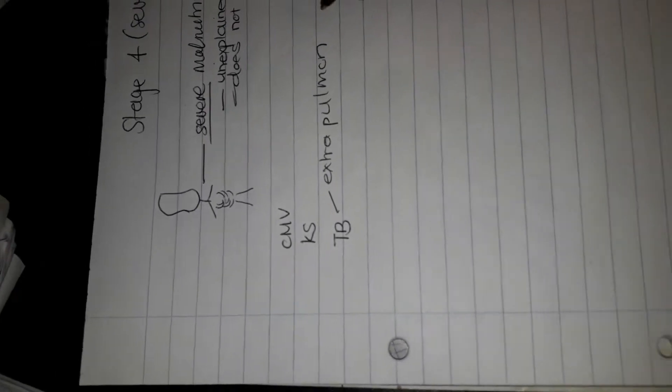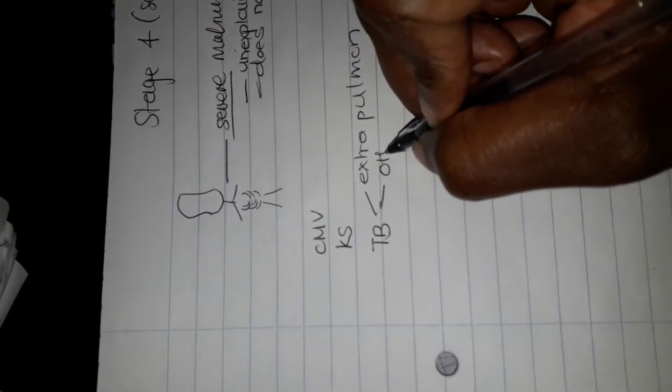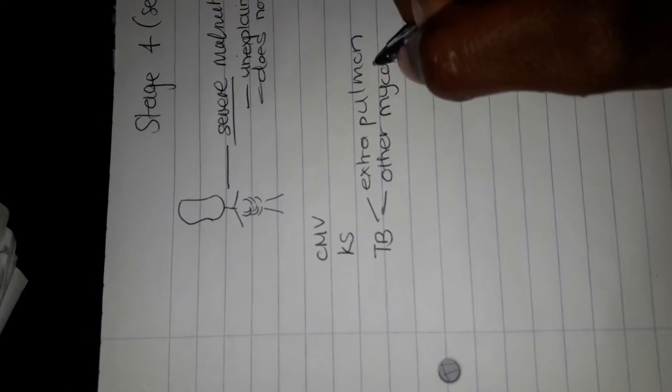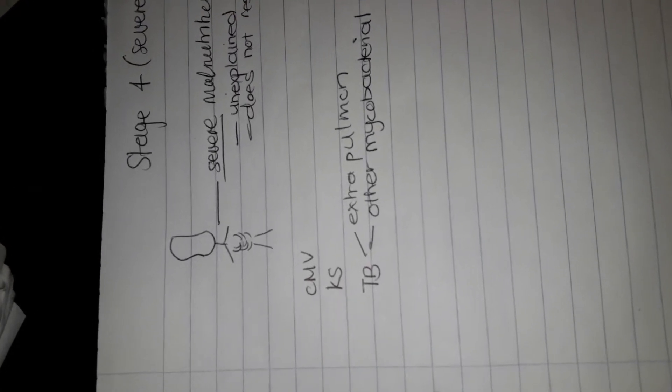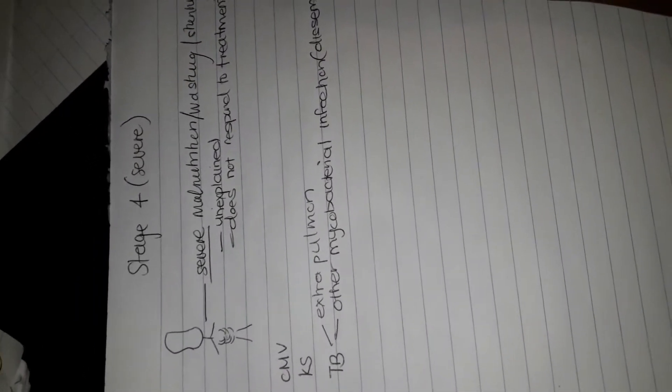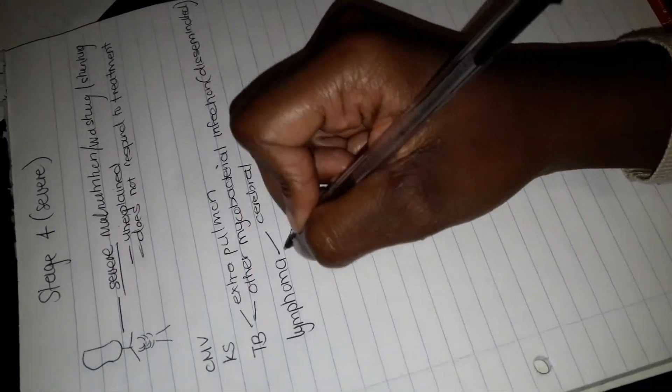Now that we're talking about TB, we'll also talk about other mycobacterial infections. These mycobacterial infections have to be disseminated. When I think of TB, I think of lymph nodes, and that's how the word lymphoma comes up. The types of lymphoma that fall under this stage are cerebral lymphomas and B-cell non-Hodgkin lymphoma.